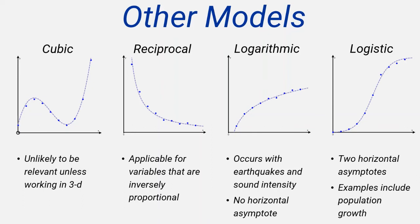Finally, there are logistic models, which look like a combination of two different types of exponential model in that they have two horizontal asymptotes.